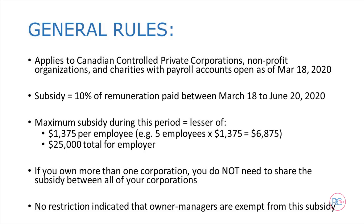Also, this subsidy is equal to 10% of the remuneration paid between March 18th to June 20th, 2020. As many get paid bimonthly, meaning your next pay run would go from March 16th to 31st, this March 18th start date means there is some prorating you'll need to do, which we'll see momentarily. There is also a maximum amount claimable for this subsidy — it is the lesser of $1,375 per employee or $25,000 total for each organization.